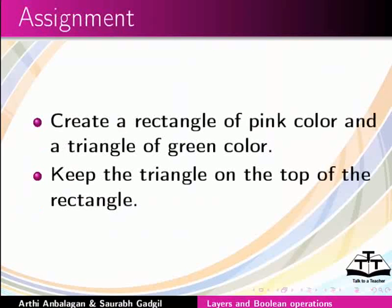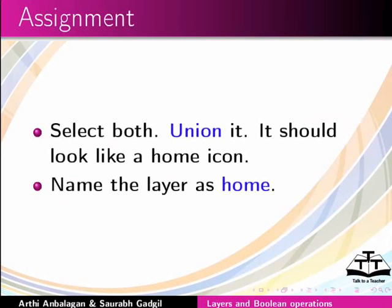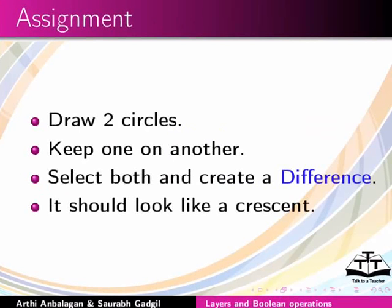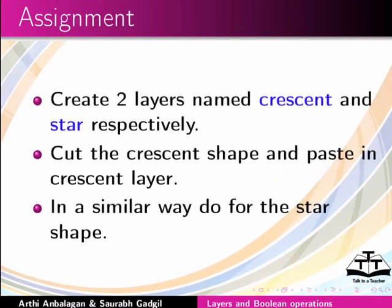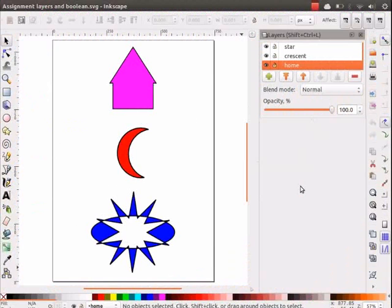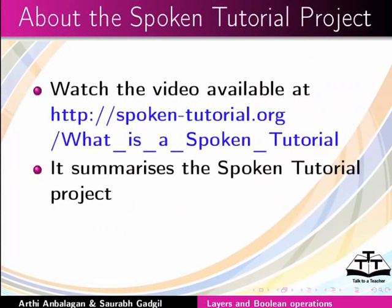Gulapi rongor ahtar aihto khetro aru hiyojiya rongor ahtar tribus toyaar karak. Tribus aihto khetro aruuparot rakhak. Uvhoy nirvashan karak, union bhebohar karak - eti ahtar home iconor nishina huwa uusit. Layer-or naam home diok. Duta brickta akak - eti ahtuk itur hitur uparot rakhak. Uvhoy nirvashan karak aru difference bhebohar karak - e crescentor nishina huwa uusit. Eta star akak, eti ahtuk uparito kendrot rakhak. Uvhoy nirvashan karak aru exclusion prayuk karak. Duta layer jatakarame crescent aru star toyaar karak. Ordha sondrakar akriti badi crescent layer-or paste karak, eki bhabhe star akriti bhabhe karak. Ee linkot uparito video toya prakalpa kharamkhepe bujai, ee tuk download kori saaok.